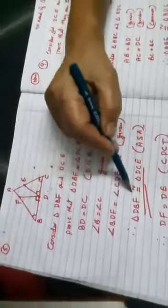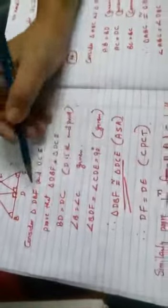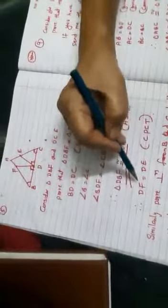So triangle DBF is congruent to triangle DC by ASA, two angles and one side. Therefore, DF is equal to DE CPCT. Similarly,